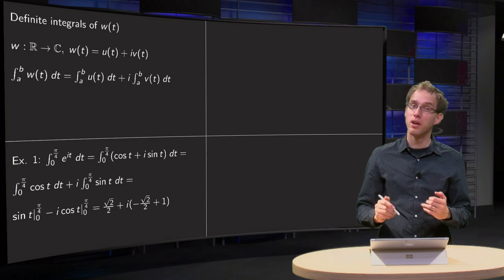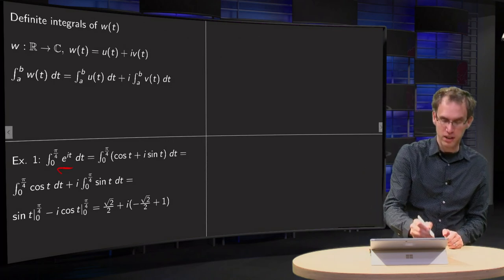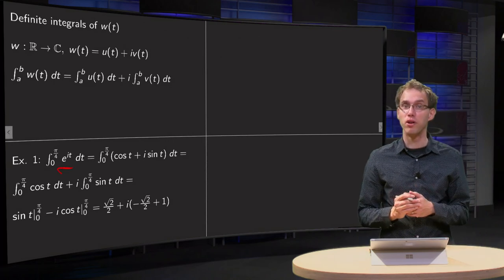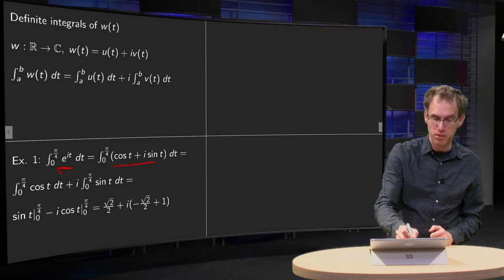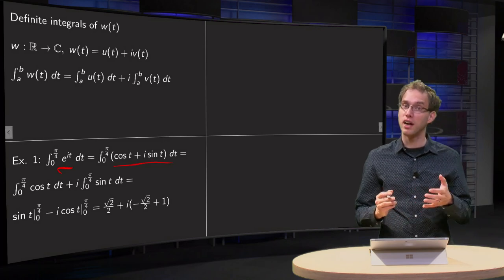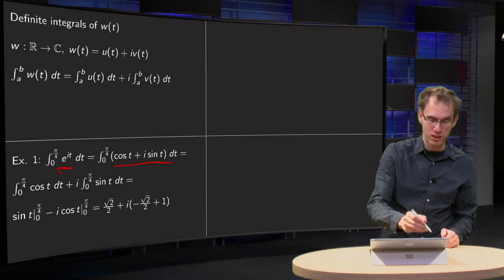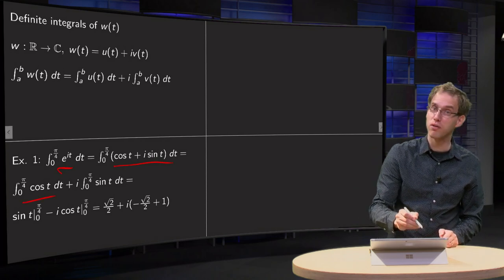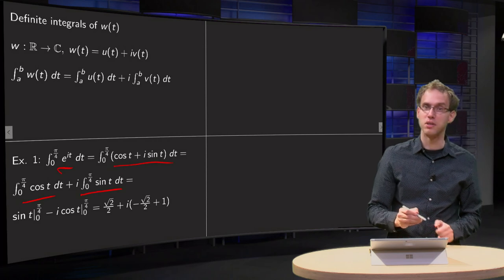So that's an example. If you want to integrate e to the power it from 0 to π/4, what do you have to do? First you have to find the real and imaginary part, cos t plus i times sin t, and you have to integrate those two separately. Integral of cos t plus i times the integral of sin t.